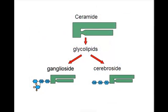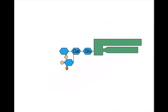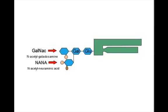In Tay-Sachs disease, there is abnormal storage of gangliosides. We have previously shown how gangliosides are derived from the basic ceramide molecule. Gangliosides have complex sugars added to them, such as N-acetylgalactosamine, abbreviated as GALNAC, and N-acetylneuraminic acid, or NANA. The GALNAC molecule is critical to Tay-Sachs disease.